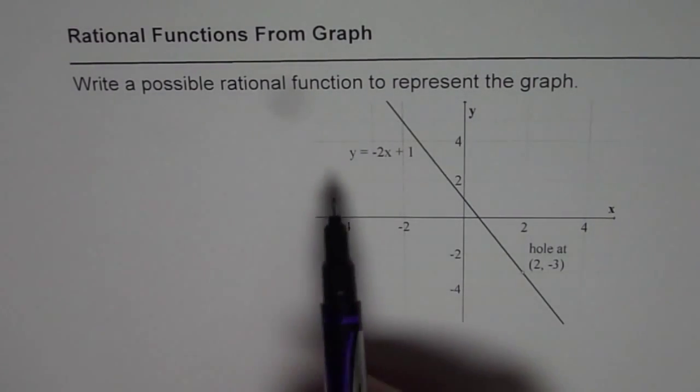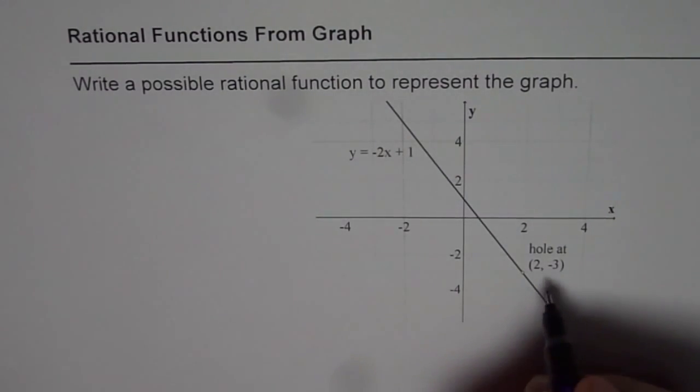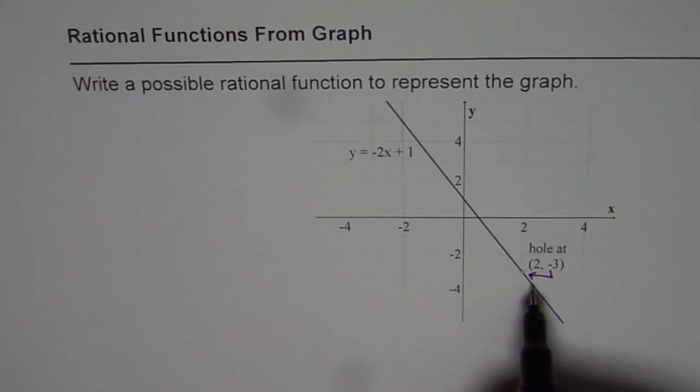Now, the equation of this line is y equals minus 2x plus 1, but it has a hole here. If you notice, there is a hole. The hole is at a point (2, -3).